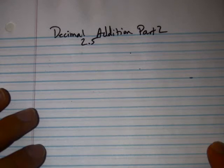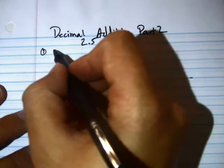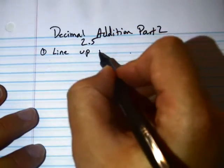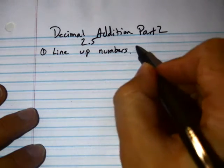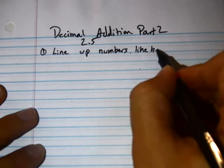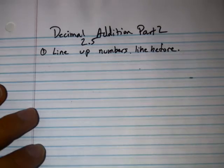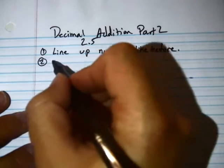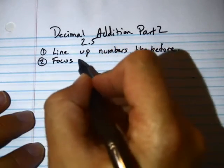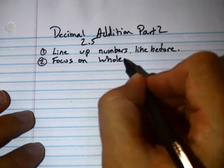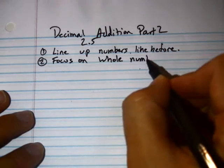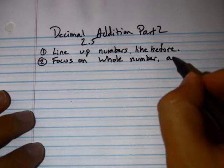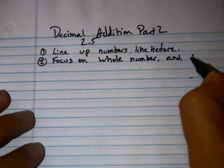They call this Decimal Addition using Front End Estimation, which means we just have an additional step. So, our first step is going to be to line up numbers like before. And then we're really only going to be focusing on the whole numbers and the tenths.